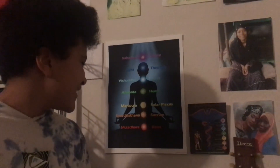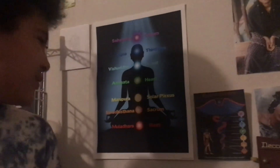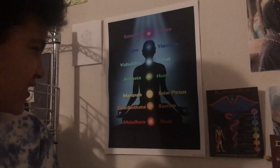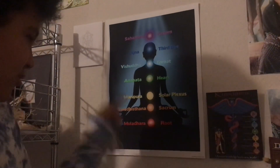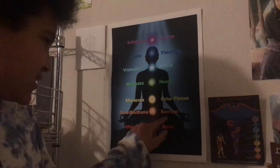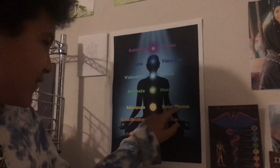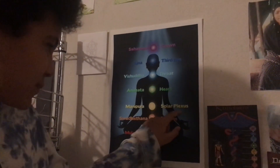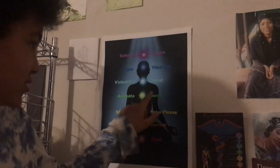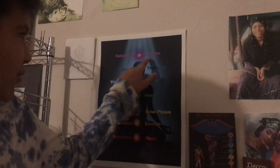So point out the chakras on that poster there, son. Explain them. The root chakra, the sacrum, the solar plexus, the heart, the throat, the third eye, and crown.